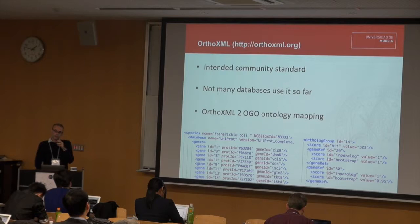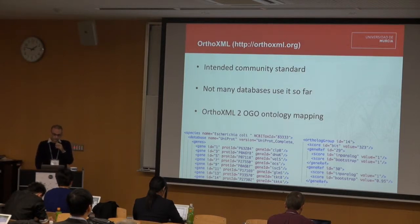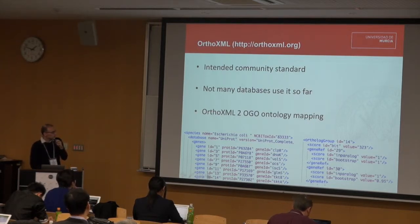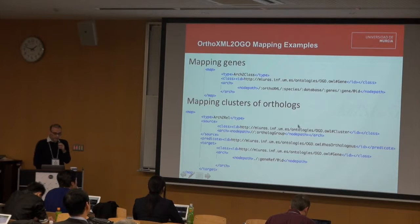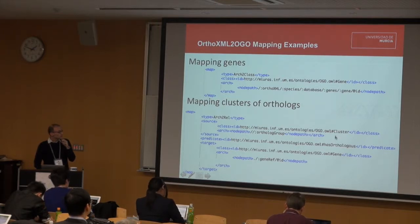One of the things we have done in the last year was to develop a mapping between the orthoXML format and our ontology, in order to be able to transform all orthoXML datasets into RDF or OWL. For example, the orthoXML format has tags such as species, genes, orthogroup, and others. What we did was define a mapping between the XML schema and the ontology — for example, mapping the clusters of orthoXML onto a property of the ontology and so on.